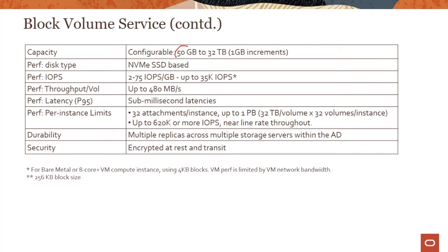Block volumes support sizes from 50 GB all the way to 32 TB — a pretty massive size. The disk type is NVMe SSD-based. IOPS performance ranges from 2 IOPS per GB up to 75 IOPS per GB, and we support up to 35,000 IOPS per volume. Interestingly, you can attach 32 volumes per instance, each up to 32 TB, giving you nearly one petabyte of storage per instance.